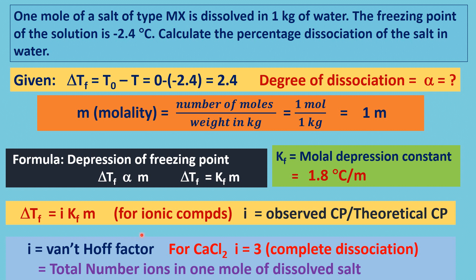For calcium chloride, the Van't Hoff factor: CaCl₂ gives Ca²⁺ plus 2 Cl⁻. Therefore, for one molecule there are three moles of ions, so i equals 3.